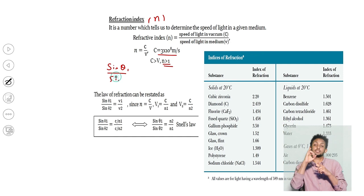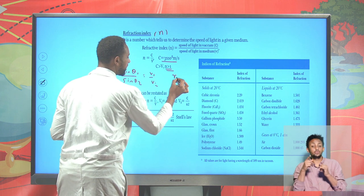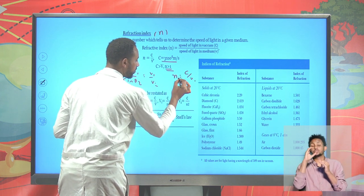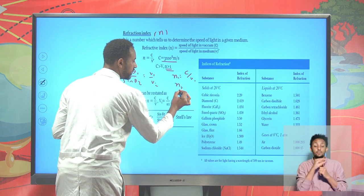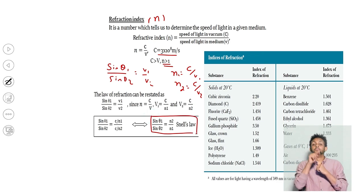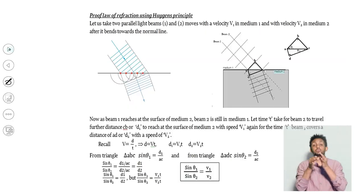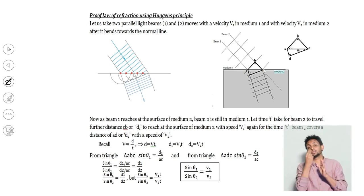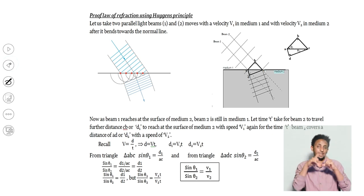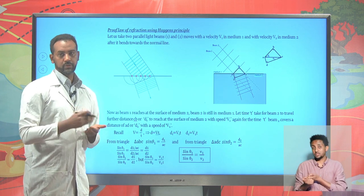Sin(θ₁)/sin(θ₂) can be given as V1/V2. Using refractive index: n₁ = C/V1 and n₂ = C/V2. This is known as Snell's law. It is possible to apply Huygens' principle to prove the law of refraction using a mathematical approach and similarity of triangles. You can find this in your textbooks.